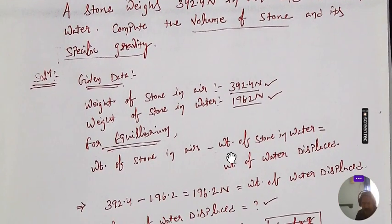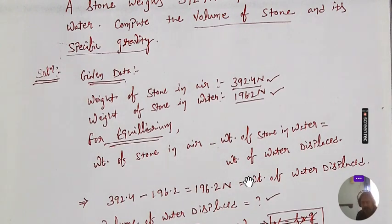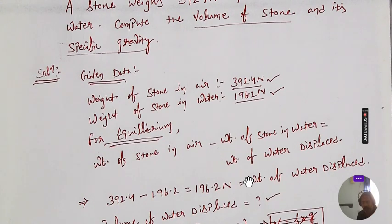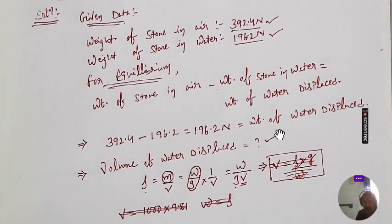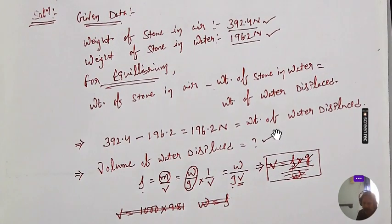For equilibrium, suppose there is a glass full of water — totally full till the top. If you put a stone in it, water spills out. To find the weight of the water displaced equals the weight of the stone. Similarly, the volume of the water displaced equals the volume of the stone. So for equilibrium: weight of stone in air minus weight of stone in water equals weight of water displaced.